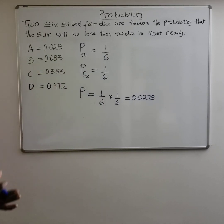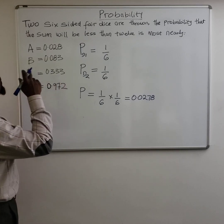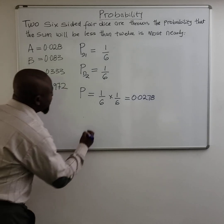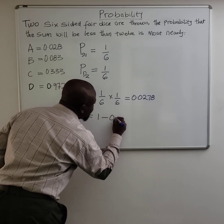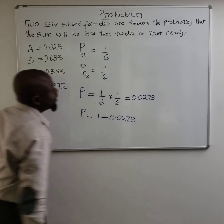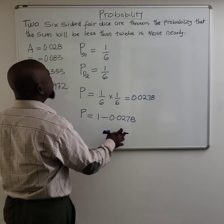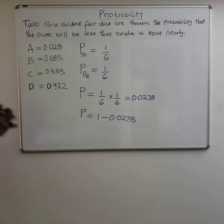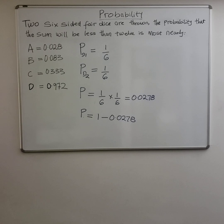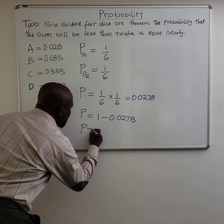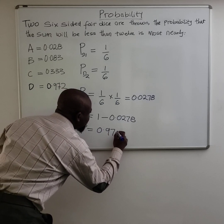That is the probability of getting a six and a six, the sum of which gives you 12. But the question asks: what is the probability that the sum will be less than 12? The probability of a sum less than 12 is greatly higher than the probability of getting a sum of 12, since there's only one possibility for a sum of 12. So the probability of a sum less than 12 is going to give you 0.972.